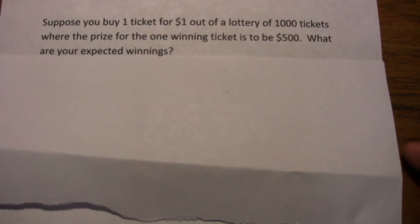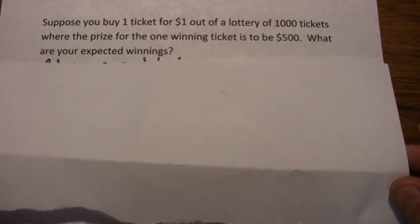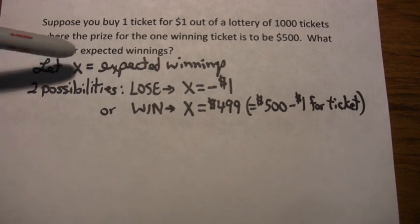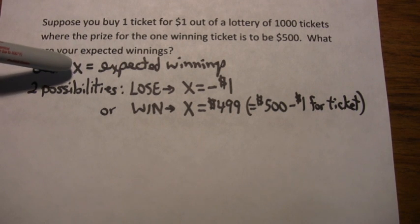I'm going to write some of this stuff down right away just so we're all on the same page. I'm going to let X stand for the expected winnings, how much I expect to win or how much the person who bought the ticket expects to win.